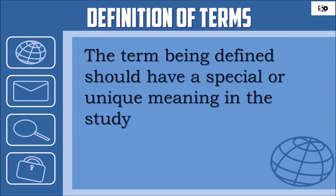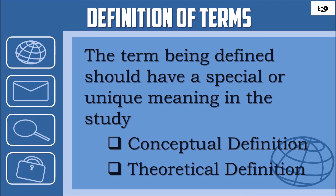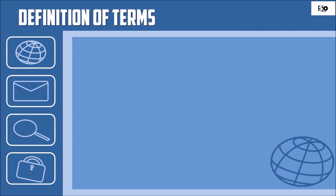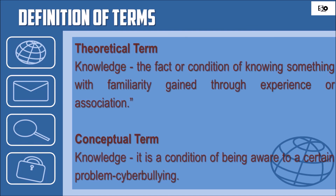Definition of Terms. The term being defined should have a special or unique meaning in the study. We have two types of definition: the conceptual definition and the theoretical definition. Conceptual definitions are based on how the researcher develops their own definition from the characteristics of the term defined, while theoretical definitions are taken from encyclopedias, books, magazines, newspaper articles, dictionaries, and other publications. Here is an example of definition of terms — we define the word 'knowledge,' with the first definition being theoretical and the second being conceptual.